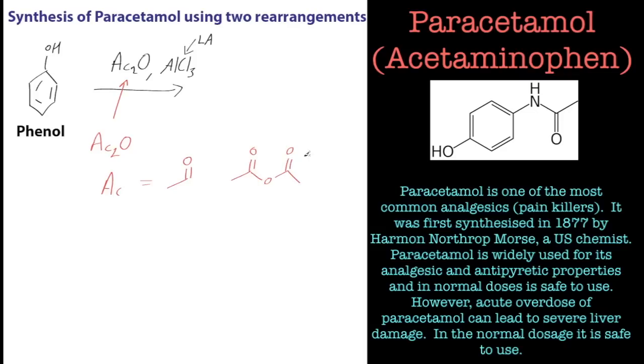This is acetyl hydride - it's just got oxygen in the middle. It's a very good source of the acetyl group, so we're going to put that on the phenol. First thing to do is acetylate the phenol.